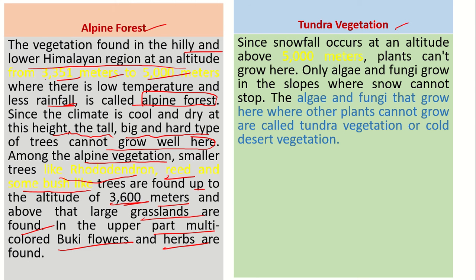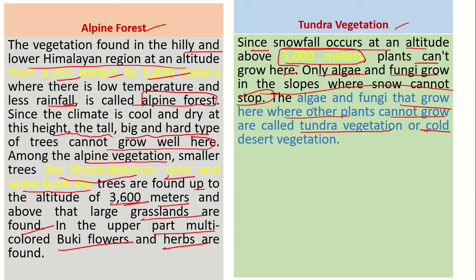The fifth type is Tundra vegetation. Since snowfall occurs at altitudes of about 5000 meters, plants cannot grow here. Only algae and fungi grow on the slopes where snow does not stop. These algae and fungi that grow where other plants cannot are called Tundra vegetation or cold desert vegetation.